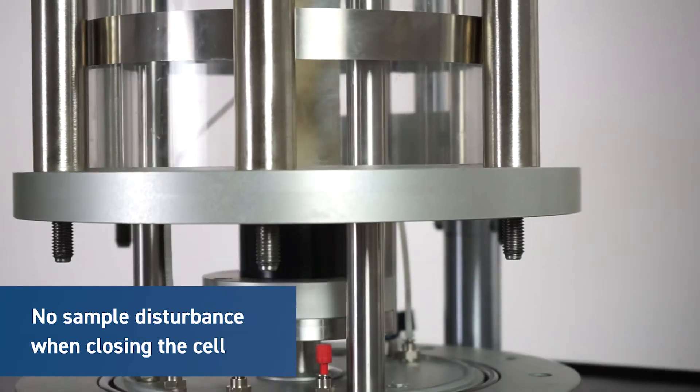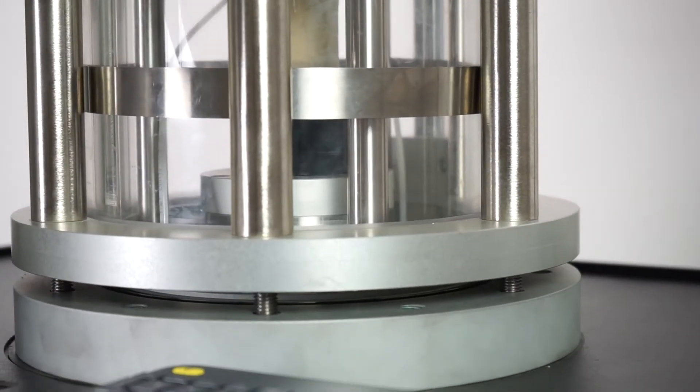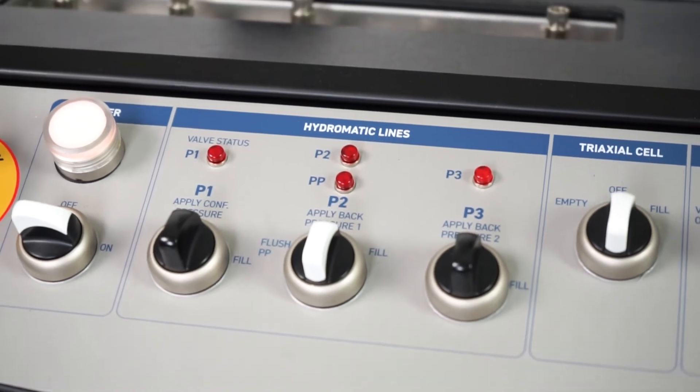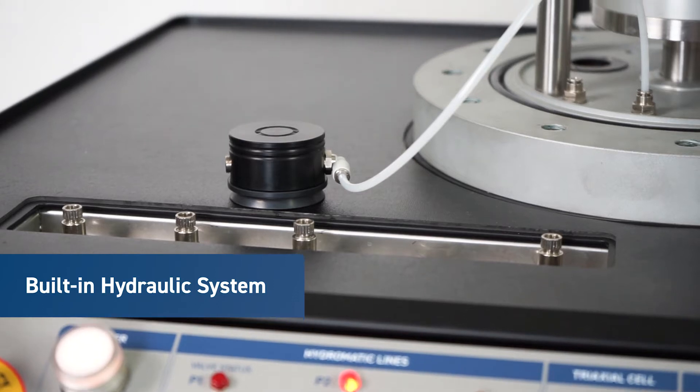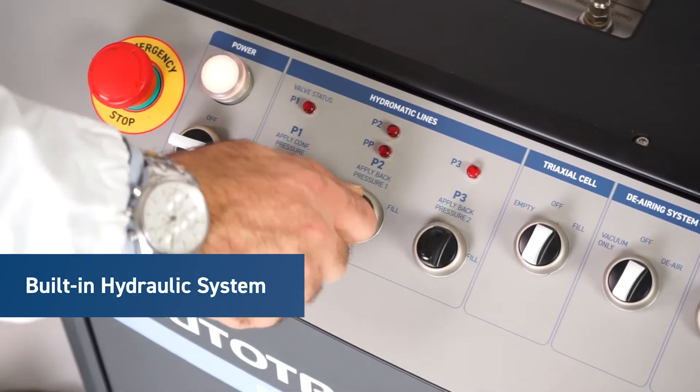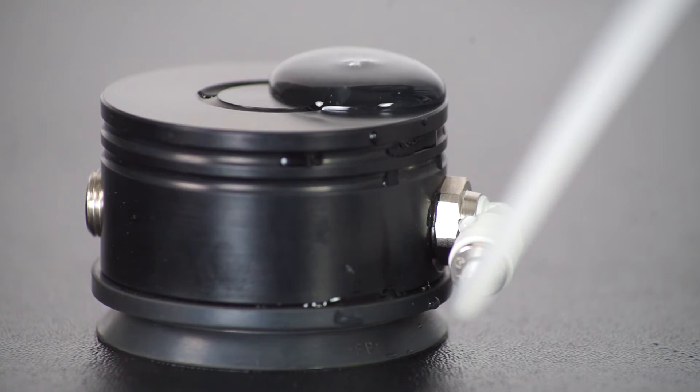They can then easily lower the triaxial cell with the specimen already connected to the submersible load cell without any disturbances. The built-in hydraulic system simplifies the preliminary testing setup, contrary to other more complex systems that require lots of manual operations with a risk of damaging the sample.